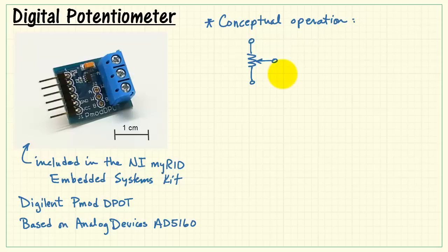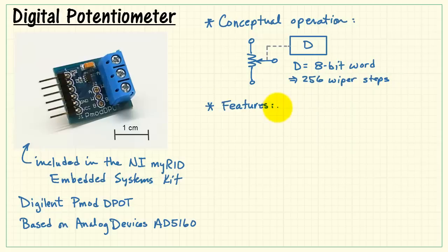Conceptually, you can think of this device as the usual three-terminal potentiometer with fixed value resistance between the two end terminals and a movable wiper in between, except in this case we use a digital value to control the wiper position. This is an 8-bit word, which means we have 256 wiper steps or positions.